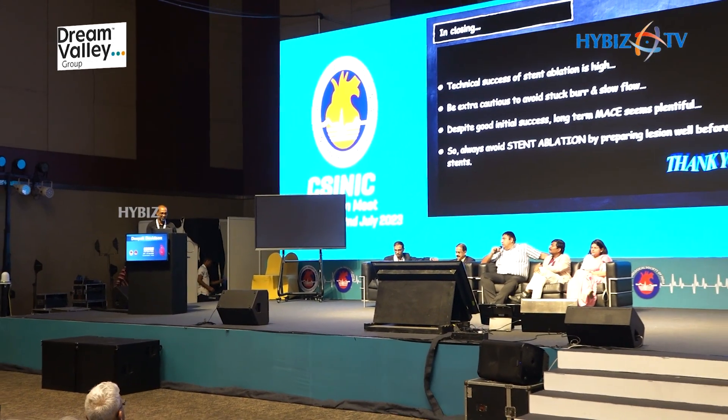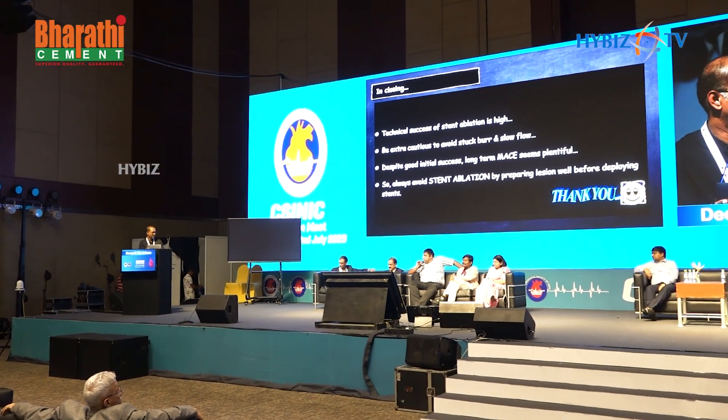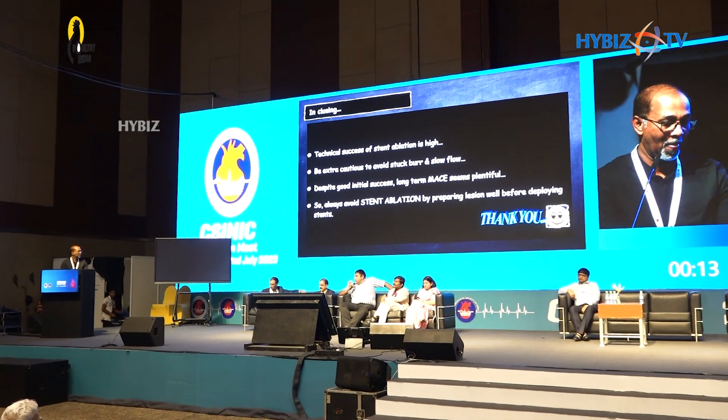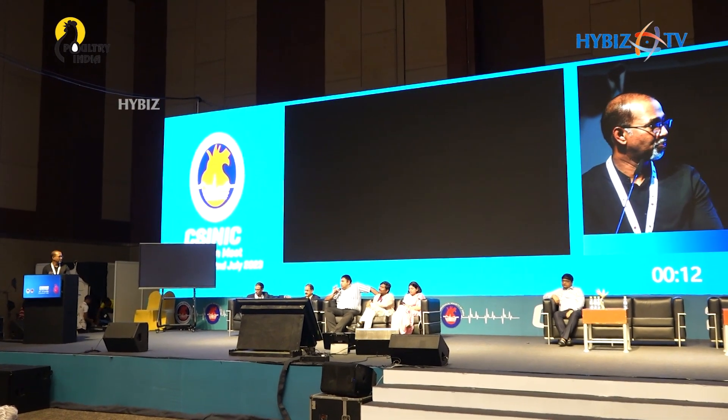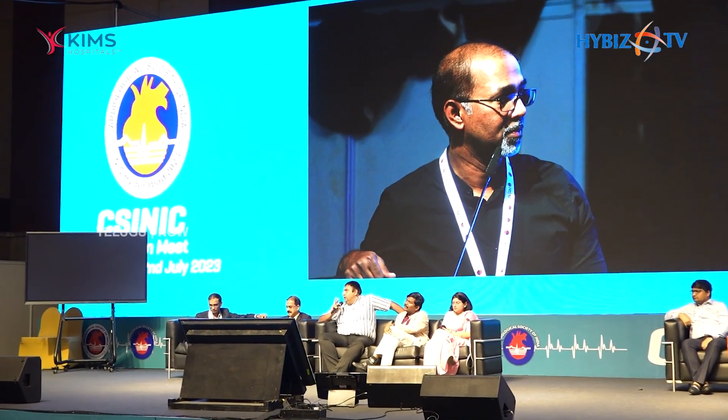Thank you so much. Very nice presentation, Dr. Deepak. I have a couple of questions. Why should you start with a lower size burr? And you upgraded through three burrs starting with 1.25 to 1.5 — given the distal vessel diameter is more than three millimeters, why didn't you opt for a bigger size burr? As per the trial, the burr-to-distal artery ratio should be around 0.5 to 0.6.